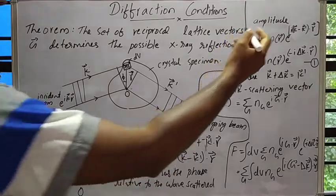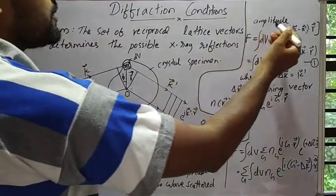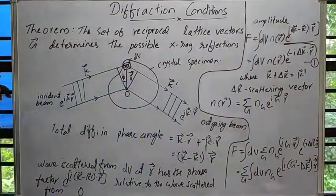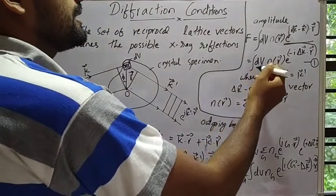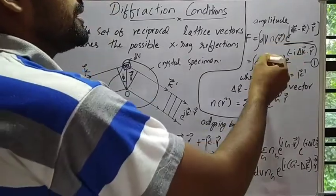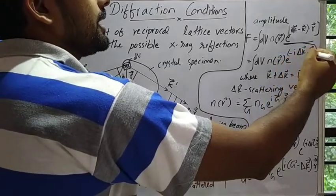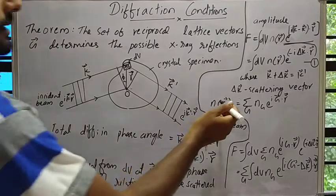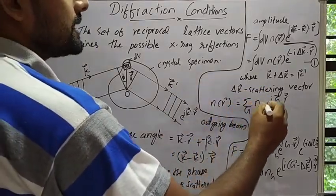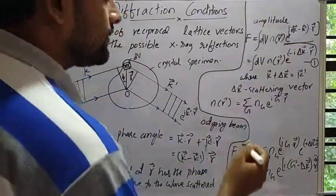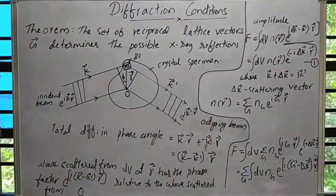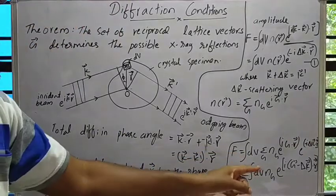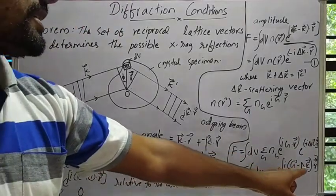The amplitude of the scattered wave is proportional to the integral of n(r) dV times the phase factor e raised to i(k − k')·r, which equals the integral dV·n(r)·e^(−iΔk·r), where Δk = k' − k is known as the scattering vector. Substituting the Fourier expansion of the electron number density n(r) = Σ_G n_G e^(iG·r), the amplitude becomes the integral dV times Σ_G n_G e^(iG·r) e^(−iΔk·r), which equals Σ_G n_G times the integral dV e^(i(G − Δk)·r).